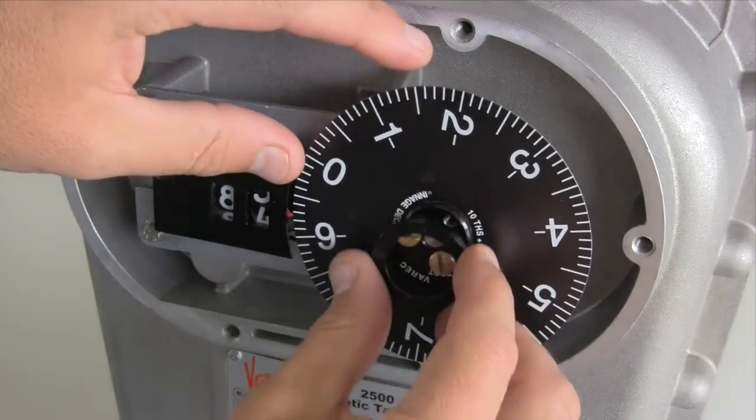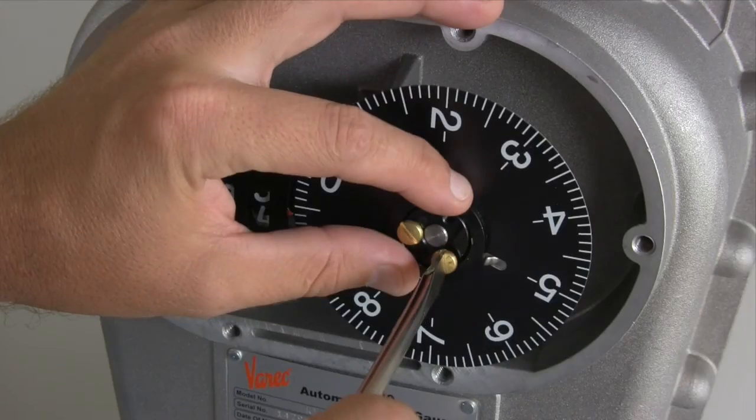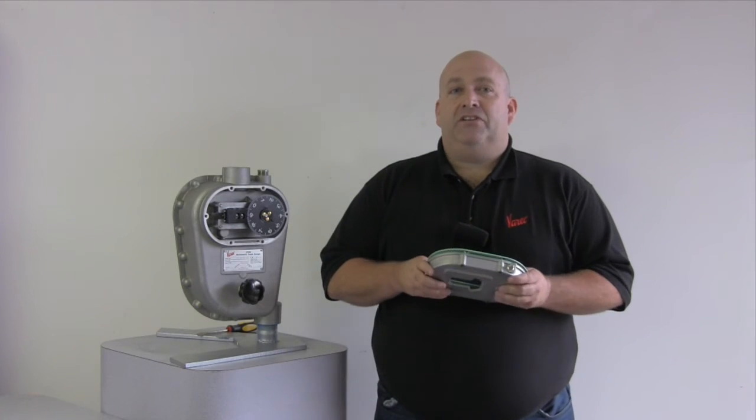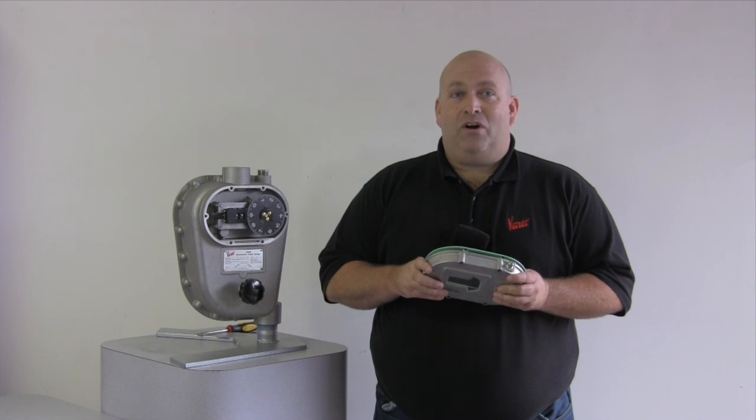When it's right, replace the dial, retaining ring, and fasten down the brass screws. Check out our other maintenance procedures on the Verett YouTube channel. Thanks for watching.